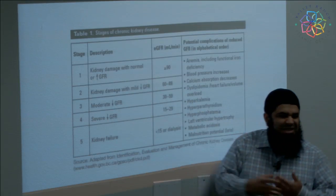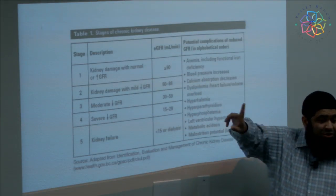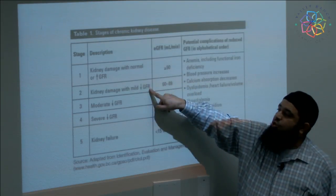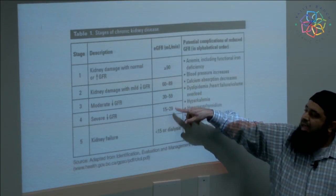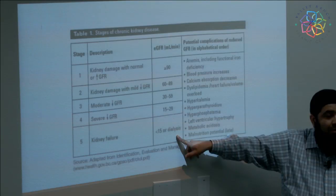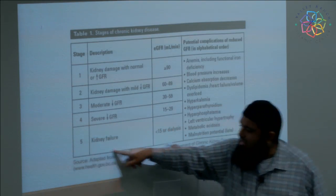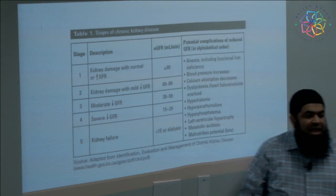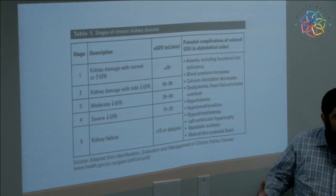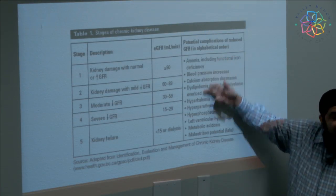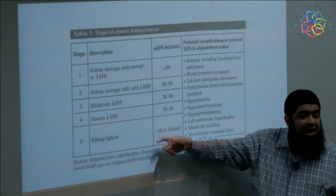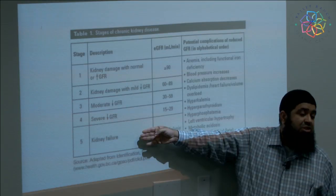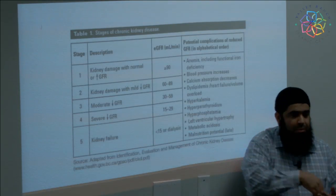Staging is based on GFR. Stage one is GFR of 90 or above with kidney damage. Stage two is mildly reduced, 60–89. Anything less than 60, you start having problems. If kidney function is less than 15, you cannot maintain good function, you develop multiple secondary complications, and cannot get rid of all the toxins — then you have to go toward what we call renal replacement therapy.